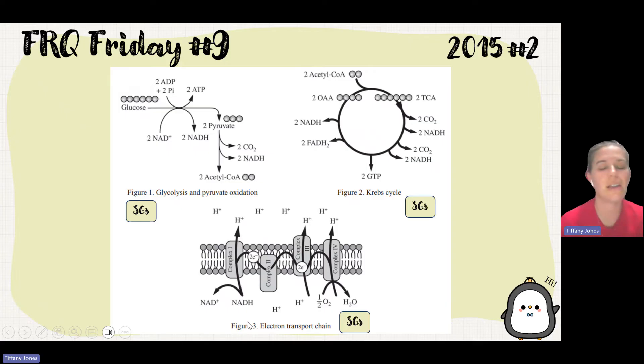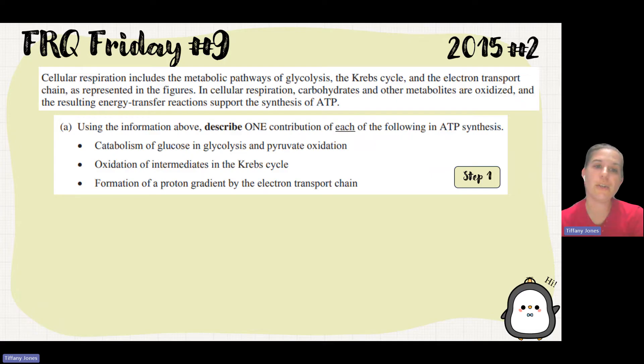They're showing us the electron transport chain. Cellular respiration includes these different pathways of glycolysis, Krebs cycle, and electron transport chain, as represented by the figures. Carbohydrates and other metabolites are oxidized, and the results in energy transfer reactions support the synthesis of ATP. Using the information provided in the diagram, describe one contribution of each of the following to ATP synthesis.